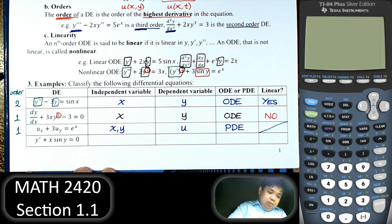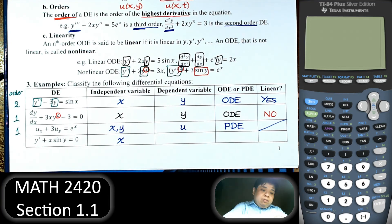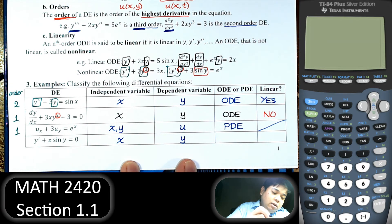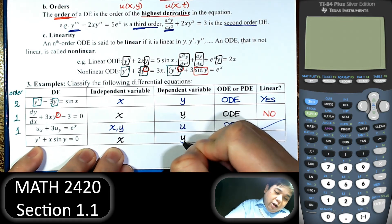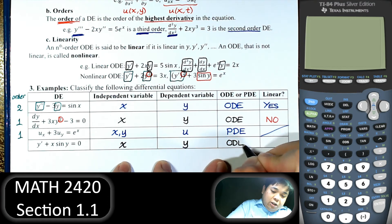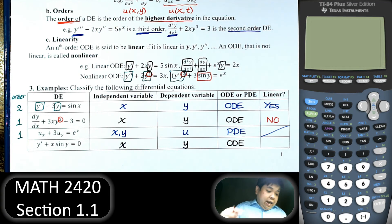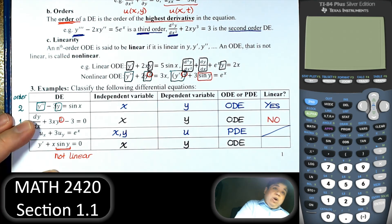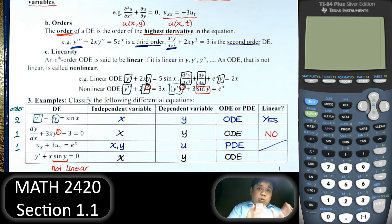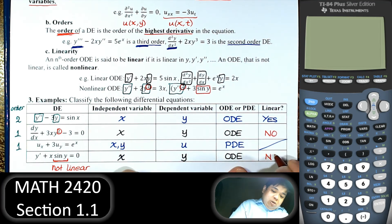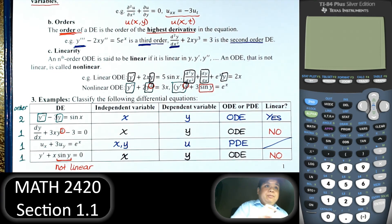Next equation. We see y prime, so y is a function of x — x is the independent variable and y depends on x. There is only one independent variable, so this is an ordinary differential equation. For linearity: we have sine of y, which is not linear — only y prime is a linear term, but sine y is not. So the answer is nonlinear. The highest derivative is first order, so this equation is order 1.